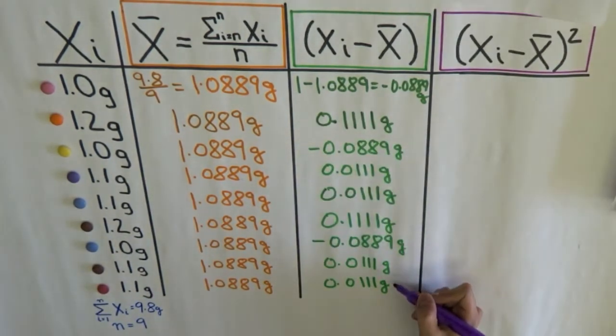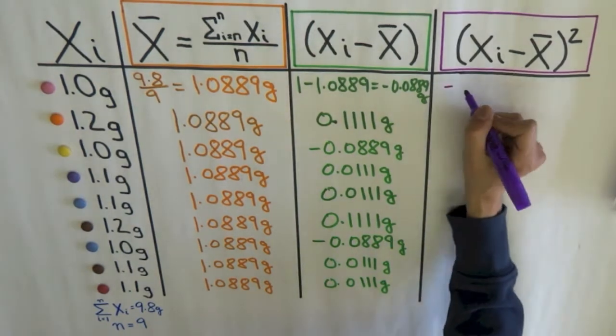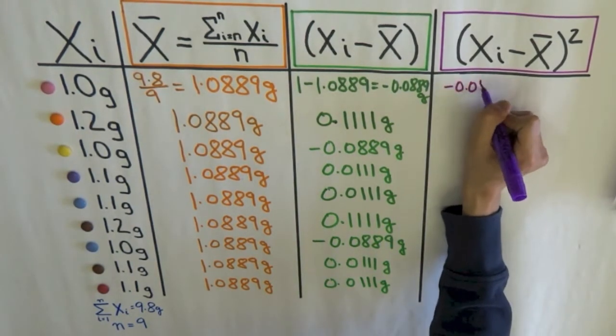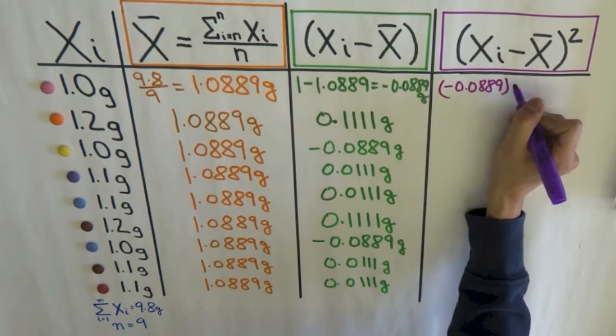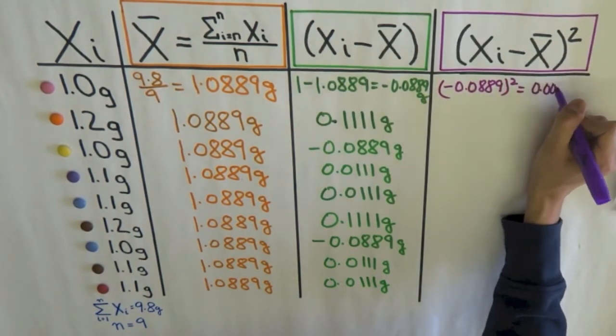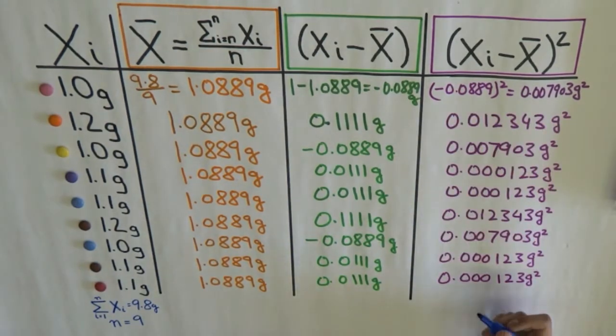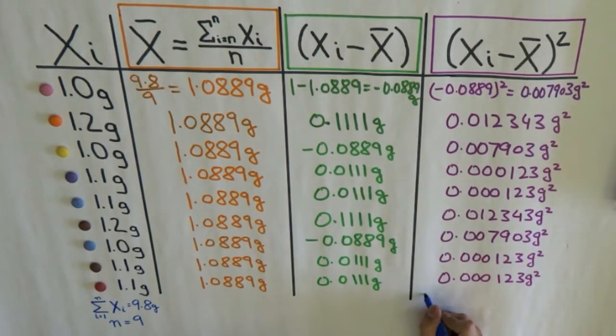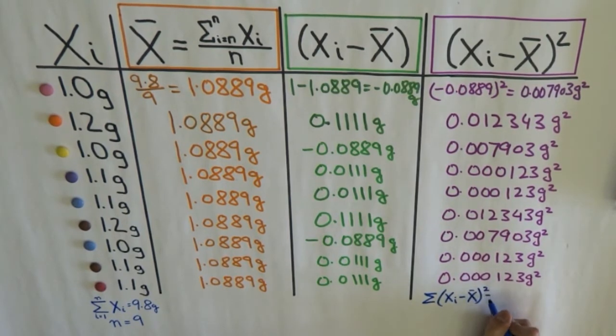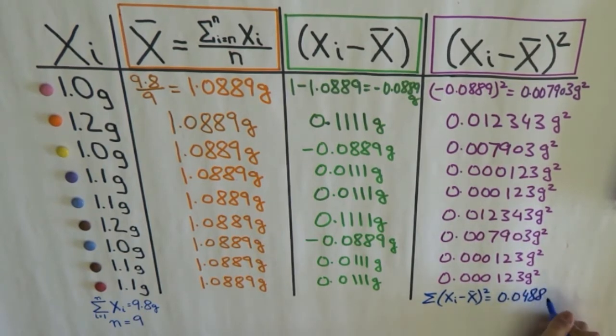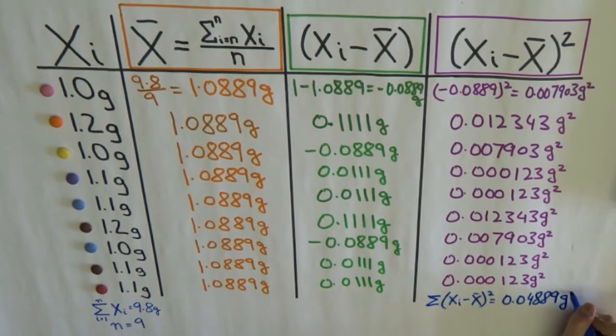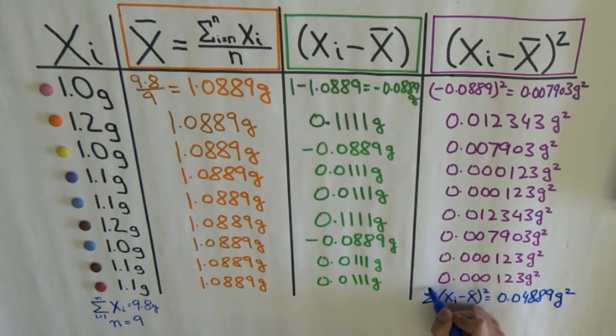Now, I'm just going to square these numbers so that they are all positive. 0.0889 squared gives me... Now, I can do this for the remaining smarties. Now, if you calculate the sum of these numbers, it will come out to be...